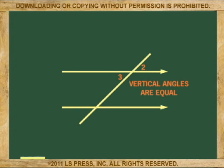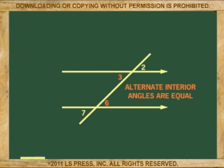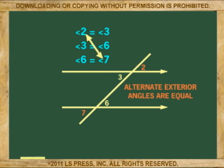The alternate exterior angles are equal because angle 2 is equal to angle 3 because they are vertical, and angle 7 and angle 6 are equal because they are also vertical. So if angle 3 and angle 6 are equal, then angle 2 and angle 7 are also equal. All this is achieved by substitution.